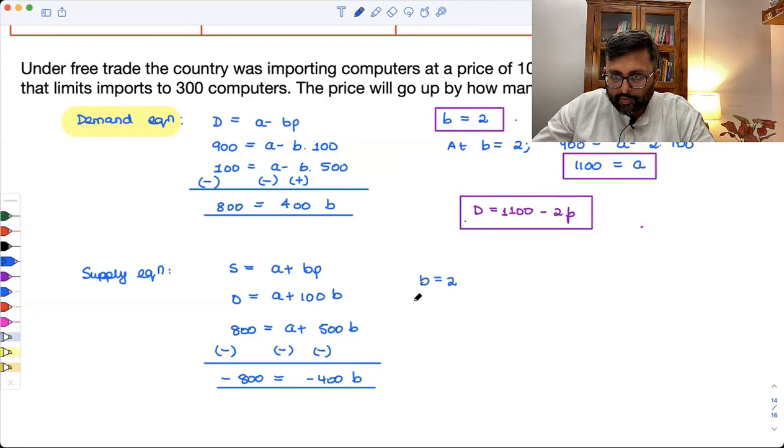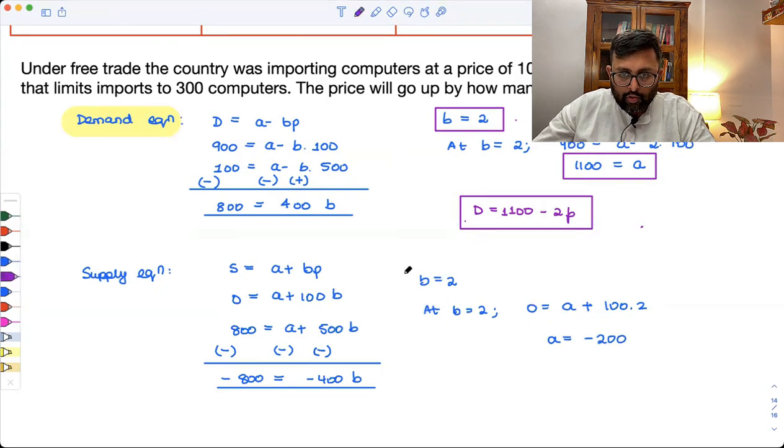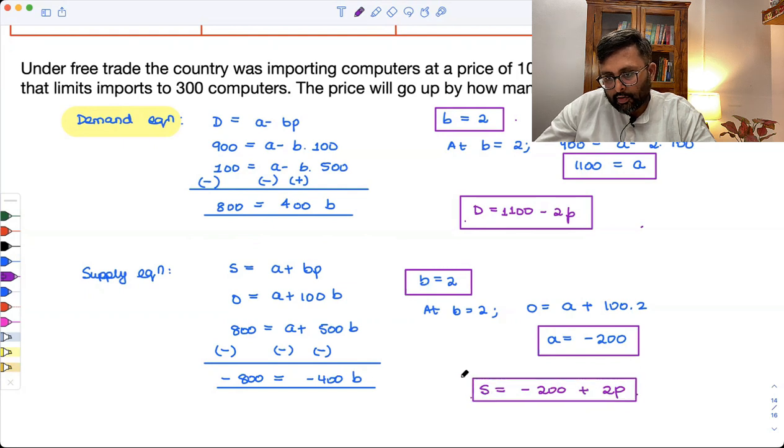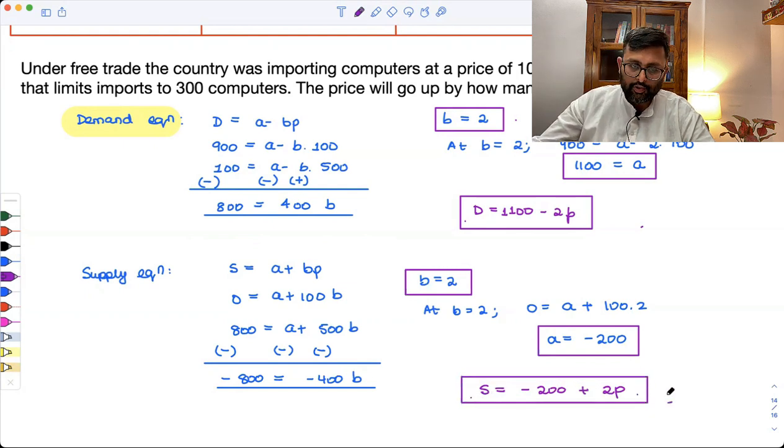So A would be equal to A plus 100 into 2. So A would be equal to minus 200. So this means that my supply equation is going to be what? My supply equation is going to be minus 200 plus 2P. That is what my supply equation is. Fair enough.